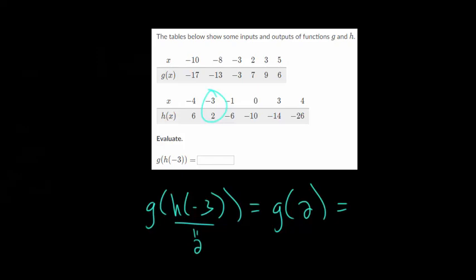Now we go up to our function again, this time with g of x, and we're looking for an x value of two, and its y value is seven. So the answer to this question is just simply seven. So when plugging in negative three to h first, and then taking that output and plugging it into g, we got a final output of seven.